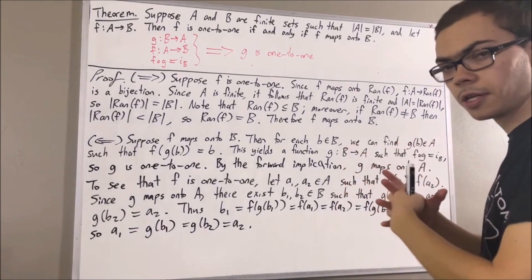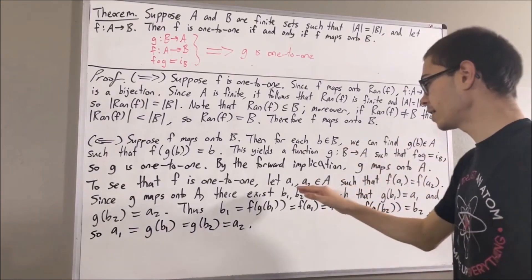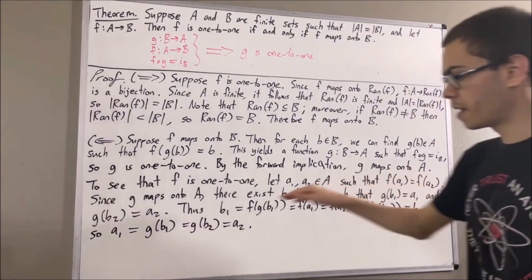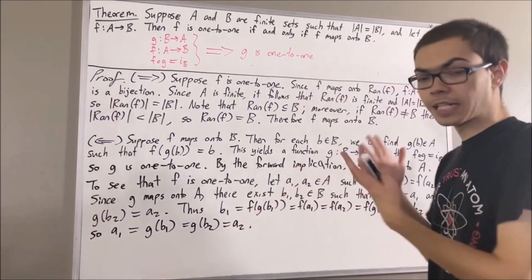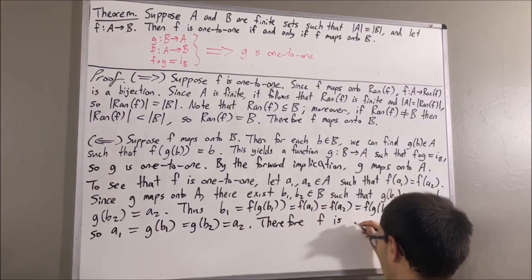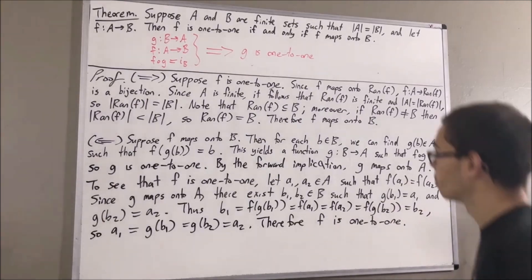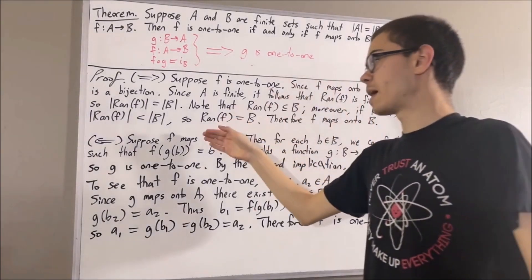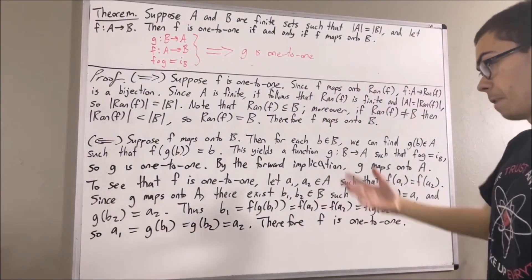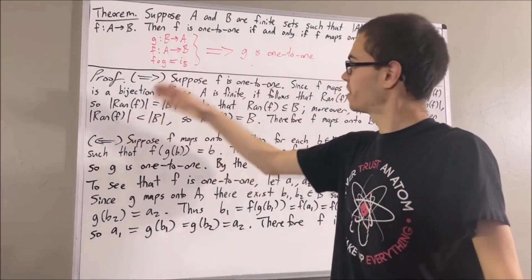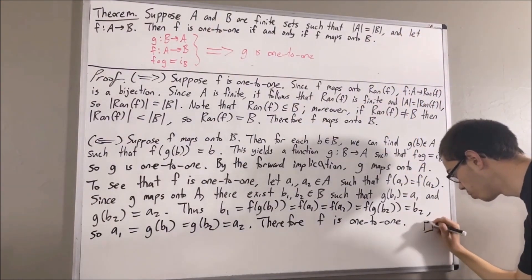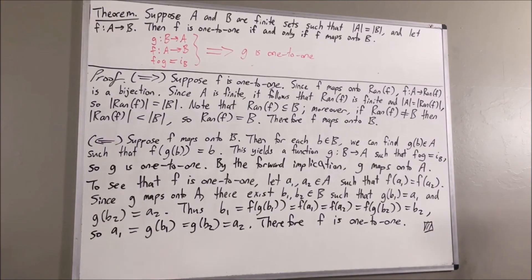Putting this together, given any two elements A1 and A2 in A, if F of A1 equals F of A2, then A1 equals A2. That's precisely what it means for F to be one-to-one. So we have proven: if F maps onto B, then F is one-to-one. At this point we have proven both directions of the if and only if, so this completes the proof.